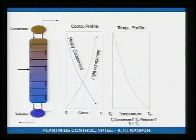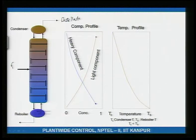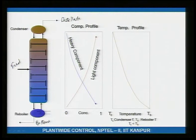The column has a feed, a reboiler, and a condenser. The distillate comes out at the top and the bottoms at the bottom. If the feed is liquid, it drops onto the trays, which fill up and overflow to the next tray. Liquid thus fills all trays below the feed.